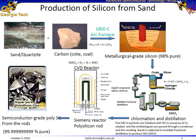Here is a more detailed representation of the same process. This image illustrates the production of semiconductor-grade polysilicon, a critical material for electronics, through several stages. In the first stage, we have sand or quartzite. The process begins with sand or quartzite — which is silicon dioxide — and carbon, which we can also call coal. These raw materials are heated in an arc furnace at a high temperature of 1,800°C.